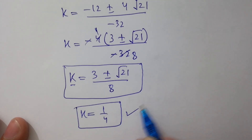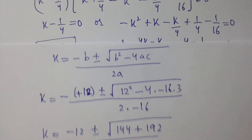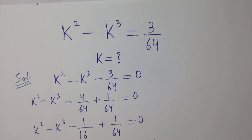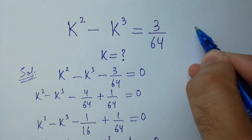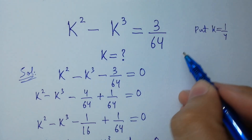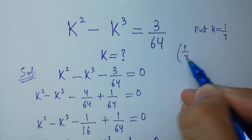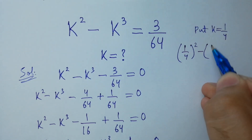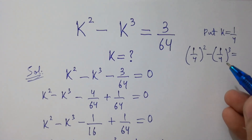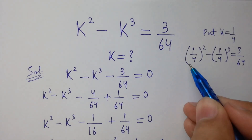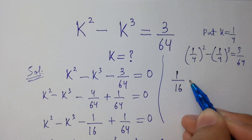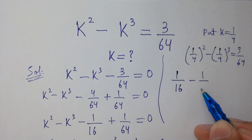Now verify. We check k squared minus k cubed equals 3 over 64. Put the value k equal to 1 over 4: 1 over 4 squared minus 1 over 4 cubed equals 1 over 16 minus 1 over 64.